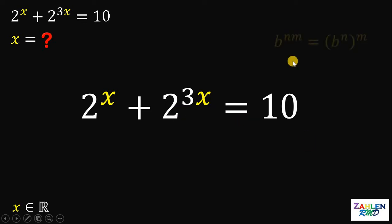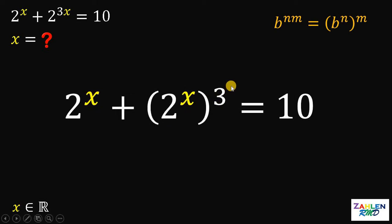Take note that if we have b raised to n times m, it is equivalent to b raised to n raised to the power of m. Therefore, this term 2 raised to 3 times x can be written as 2 raised to x raised to the power of 3.